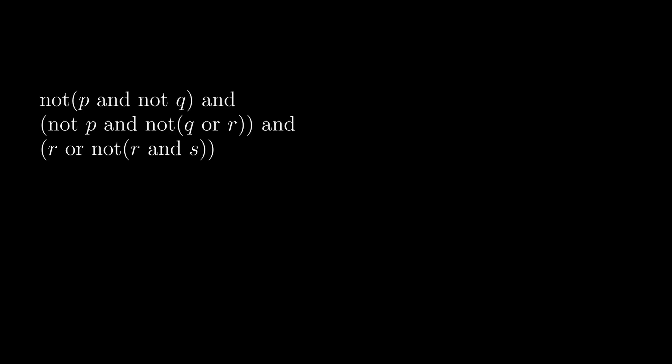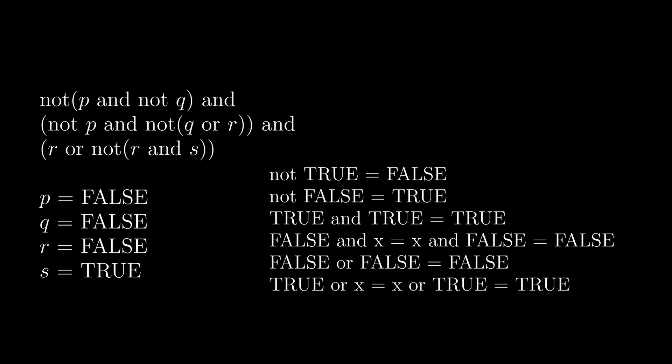The software looks at sentences like this. We want to substitute the words true and false in for the variables, and then apply these reduction rules to make it spit out true. A SAT solver tells us if it's possible to do this.